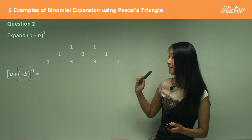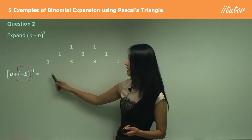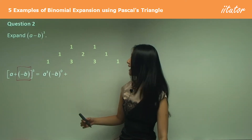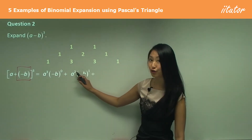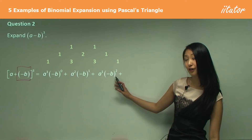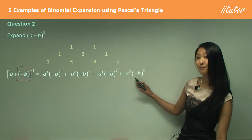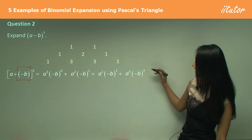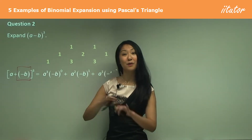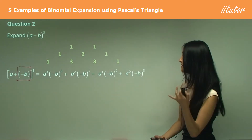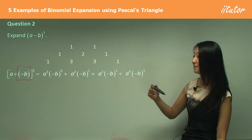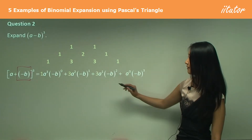So our first term is a, our second term is minus b. When we expand it, the first term is a to the power of three and negative b to the power of zero. Then subtract one, add one: a squared, negative b to the power of one. Then a to the power of one, negative b to the power of two. Then a to the power of zero, negative b to the power of three — and since negative b has the power of three, which matches the index, we stop. Now put in our coefficients: 1, 3, 3, 1.